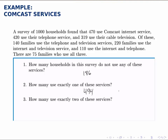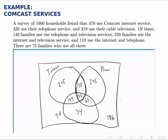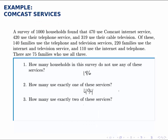For how many use exactly two services, that would be those in the intersections between two circles but not in the middle 75. That's 145 plus 65 plus 35, which equals 245. By drawing a Venn diagram, we have a systematic way of building up to these answers and being able to answer even other questions like this.